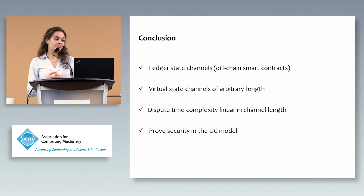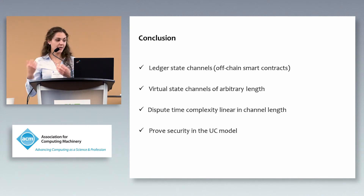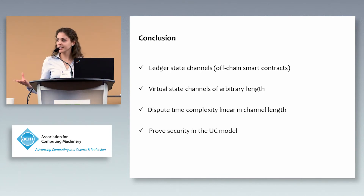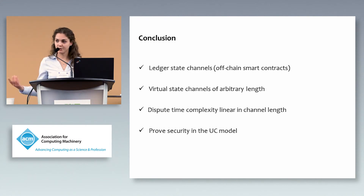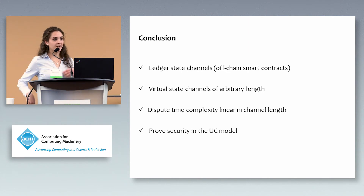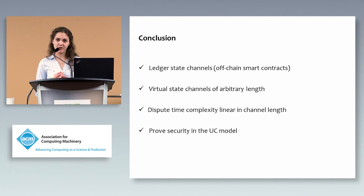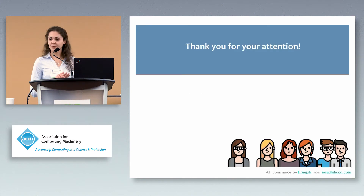To conclude: I talked about how to take smart contracts off-chain, specifically how to design ledger state channels, and how to extend this to virtual state channels of arbitrary length. I covered some challenges we faced, showing our protocol achieves linear time complexity for disputes. Finally, I briefly explained how we prove security in the UC model. More details can be found in our paper. Thank you very much for your attention.